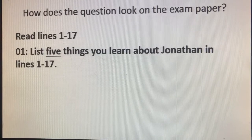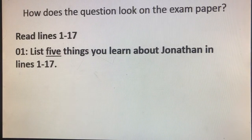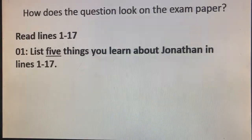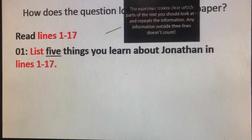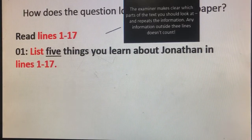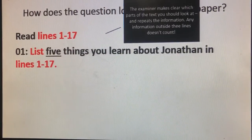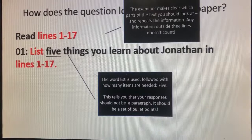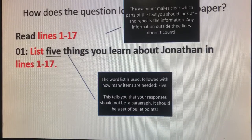Here's an example of how the question would look in full: 'Read lines 1 to 17. List five things you learn about Jonathan in lines 1 to 17.' The key information the exam board gives you is highlighted. The examiner makes clear which parts of the text you should look at and repeats the line reference in the question itself. The word 'list' is used, followed by how many items are needed — five.